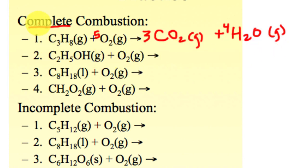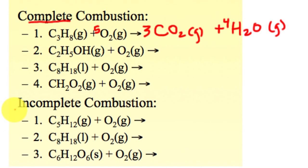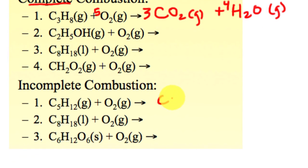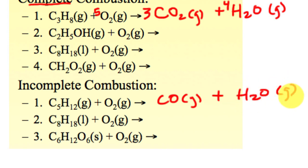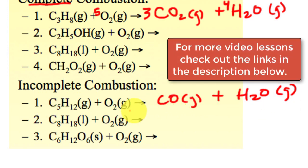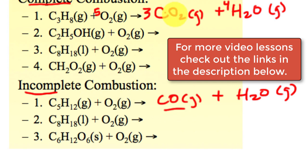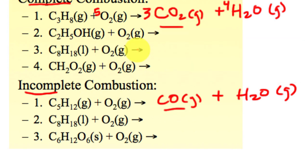So to summarize: complete combustion gives CO2 and water; incomplete combustion gives carbon monoxide (CO) gas and H2O. You can balance the incomplete combustion on your own — you should know how to balance at this point. Complete gives CO2, incomplete gives CO. I hope you enjoyed that and I'll see you in class.